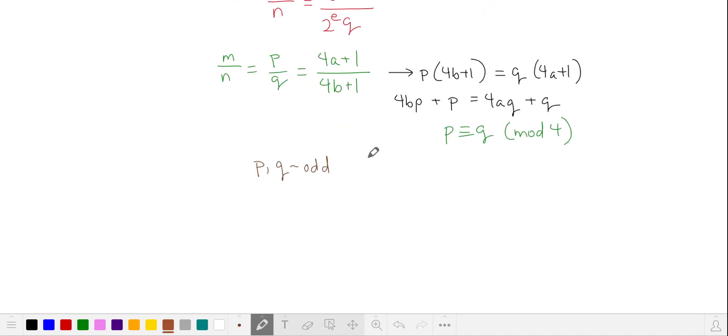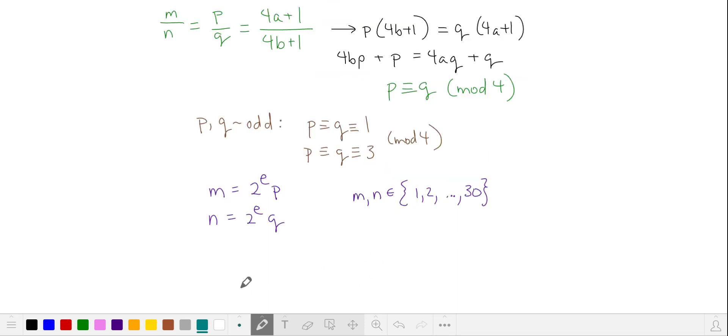Since p and q are odd, p and q are either both equivalent to 1 or both equivalent to 3 in mod 4. So now we're looking to choose our two numbers m and n.